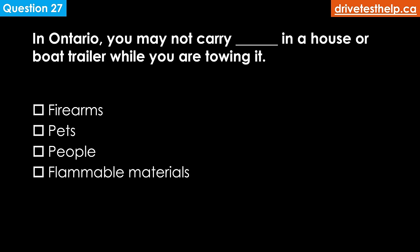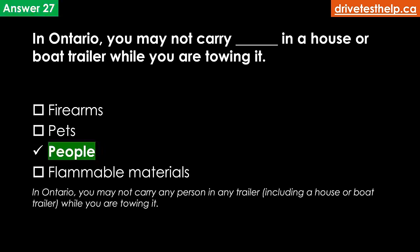In Ontario, you may not carry whom in a house or boat trailer while you are towing it? Options: firearms; pets; people; flammable materials. The correct answer is people. In Ontario you may not carry any person in any trailer including a house or boat trailer while you are towing it.